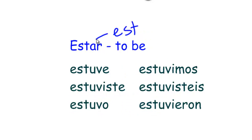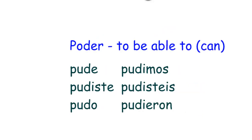Estar — you can see it goes to estuv-: estuve, estuviste, estuvo, estuvimos, estuvisteis, estuvieron. And our last verb of the batch, poder — the stem is pud-: pude, pudiste, pudo, pudimos, pudisteis, pudieron.